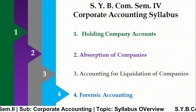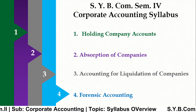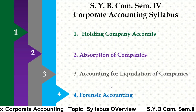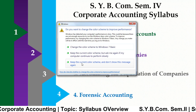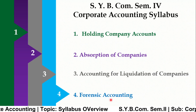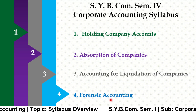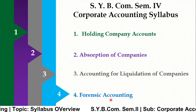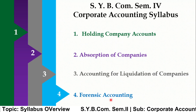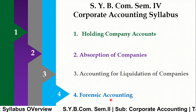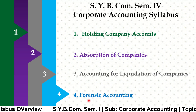The company that is held is called the subsidiary company. In Absorption, if one company absorbs another, we study what accounting has to be done. In Liquidation — or winding up — we study the accounting process. Forensic Accounting is a new topic; just like a forensic lab report is important in a criminal investigation, in accounting the topic of Forensic Accounting is similarly introduced.